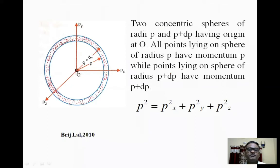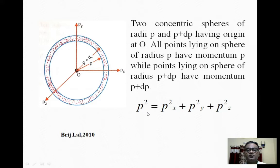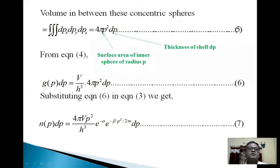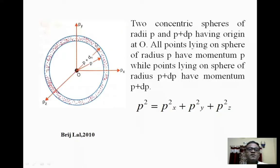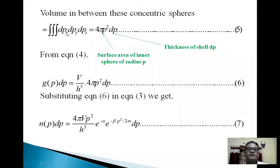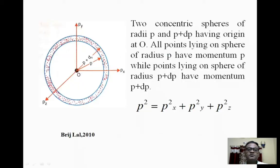See this figure. Here O is the origin and p_x, p_y, and p_z are the 3 momentum axes. Here p is the radius of the inner sphere and p + dp is the radius of the outer sphere — these two spheres are concentric. Points lying on the sphere of radius p have momentum p, and points lying on the second sphere of radius p + dp have momentum p + dp, where p² = p_x² + p_y² + p_z². The volume between these two concentric spheres is given by: ∭ dp_x dp_y dp_z = 4πp² dp, where 4πp² is the surface area of the inner sphere and dp is the thickness of the shell.